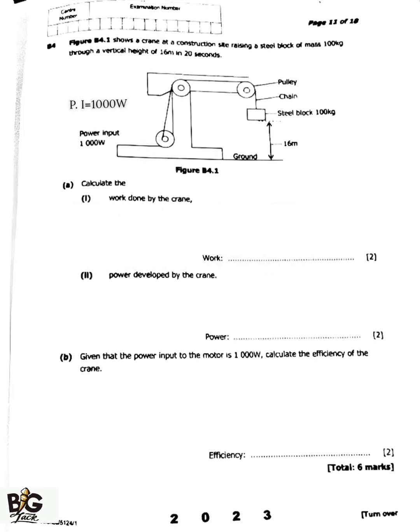We have the height which is 16 meters. The first question, part A, is saying calculate the work done by the crane. Now this work is done vertically, which means there will be gravity acting on this steel block of mass 100 kg, which will be acting downward.